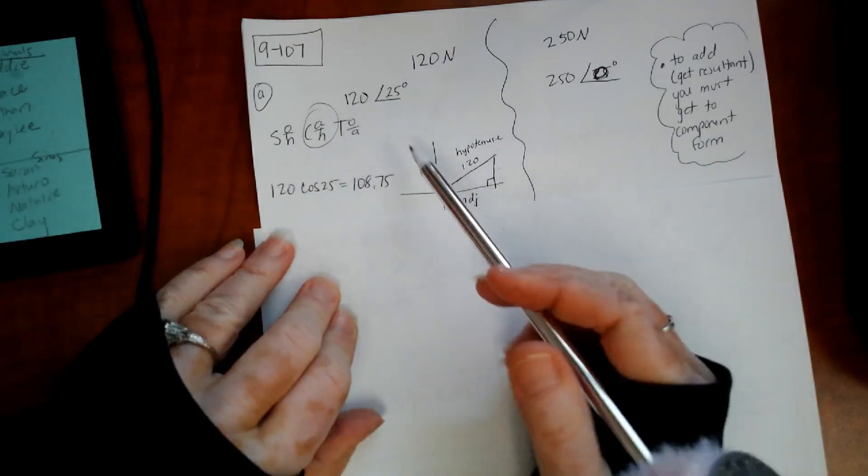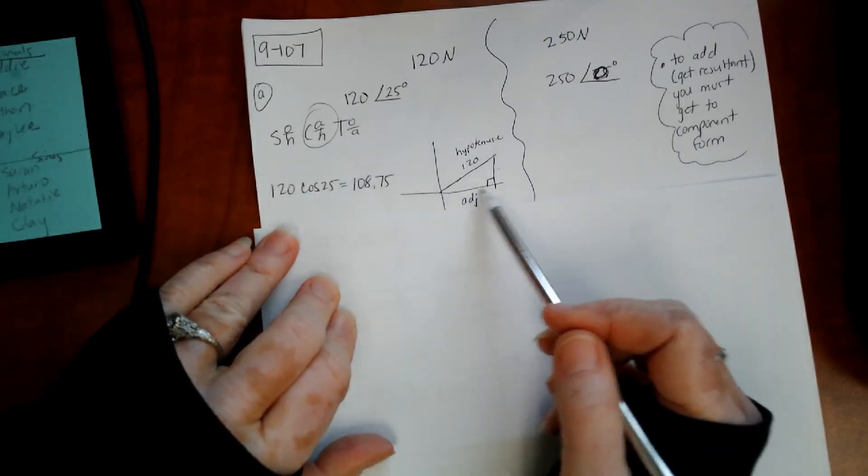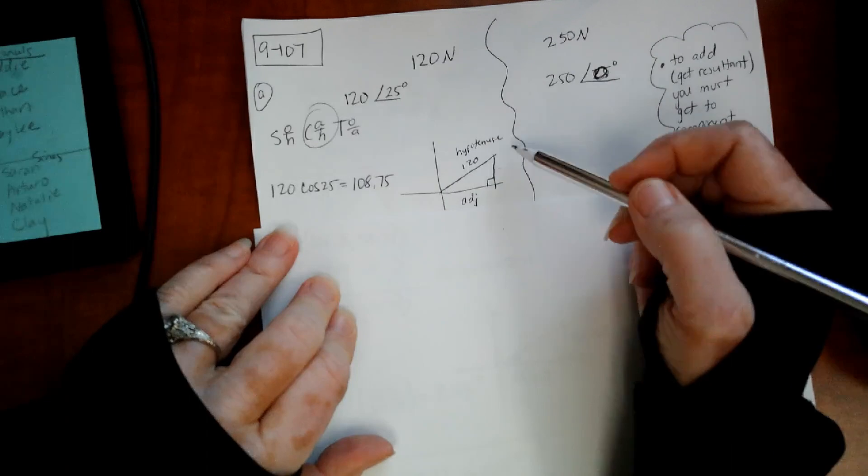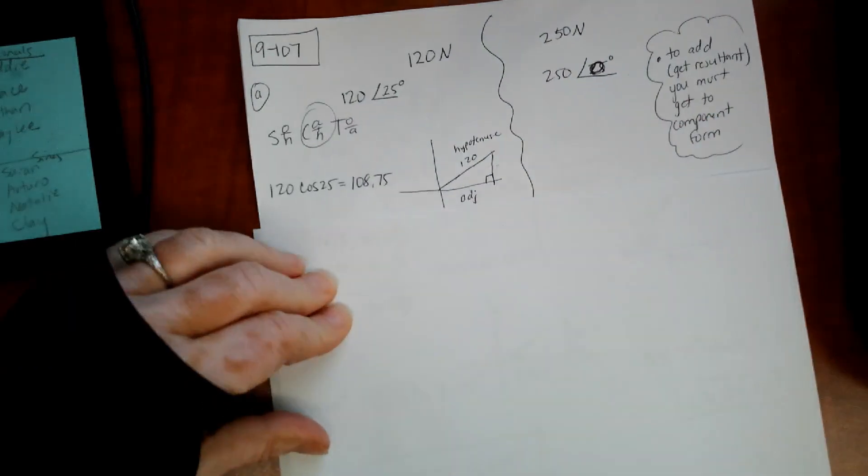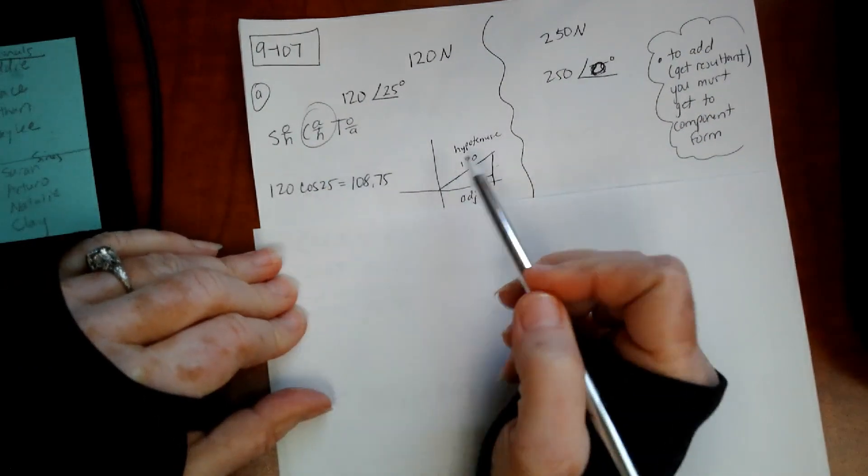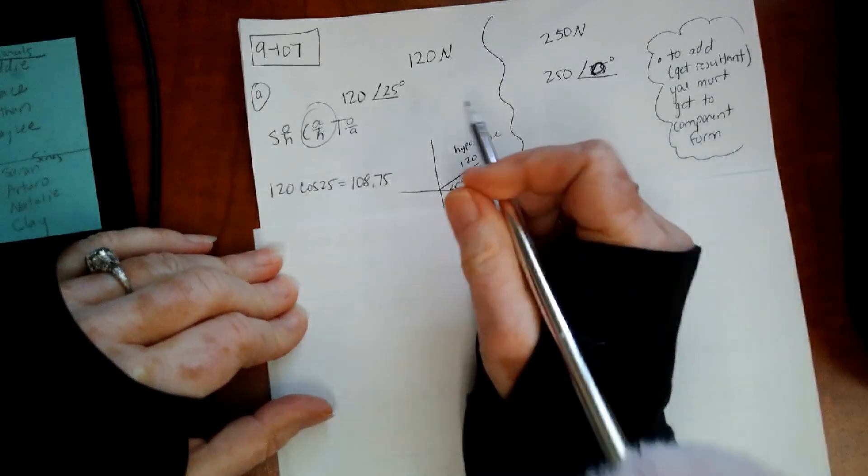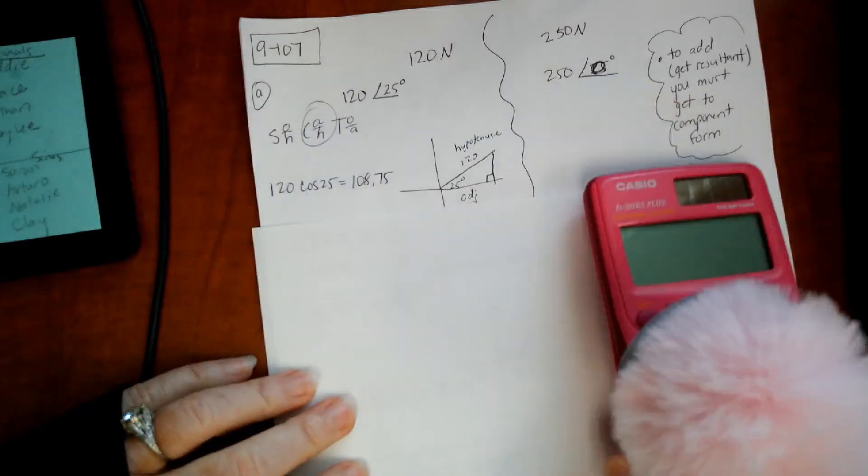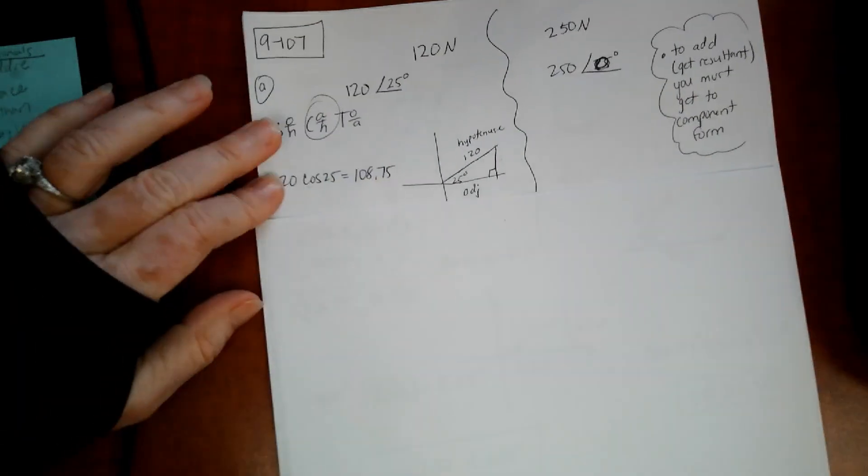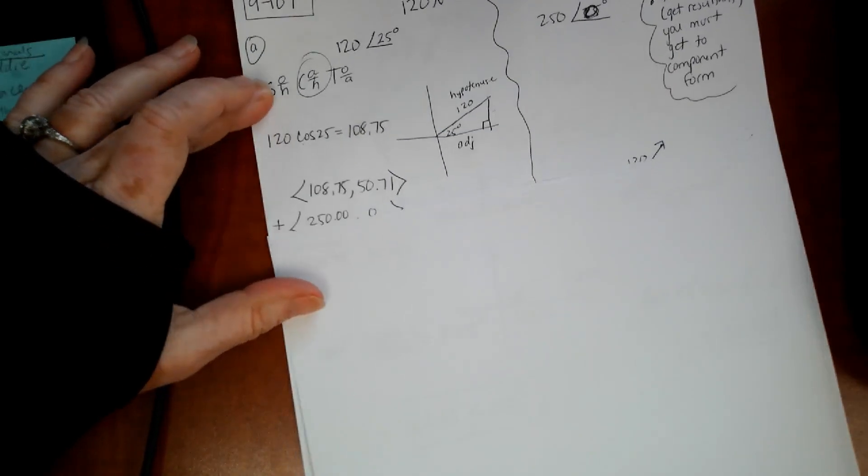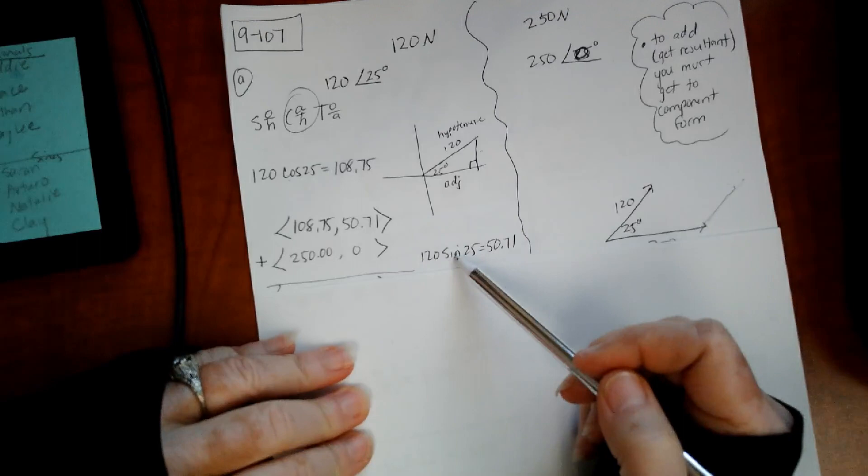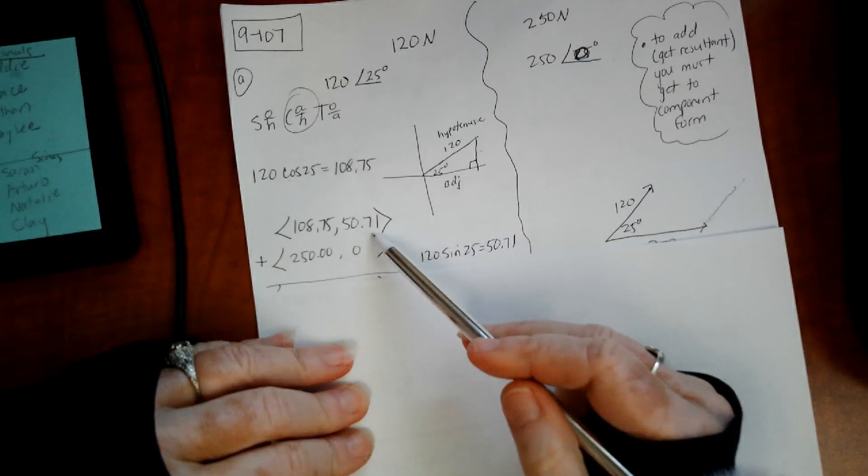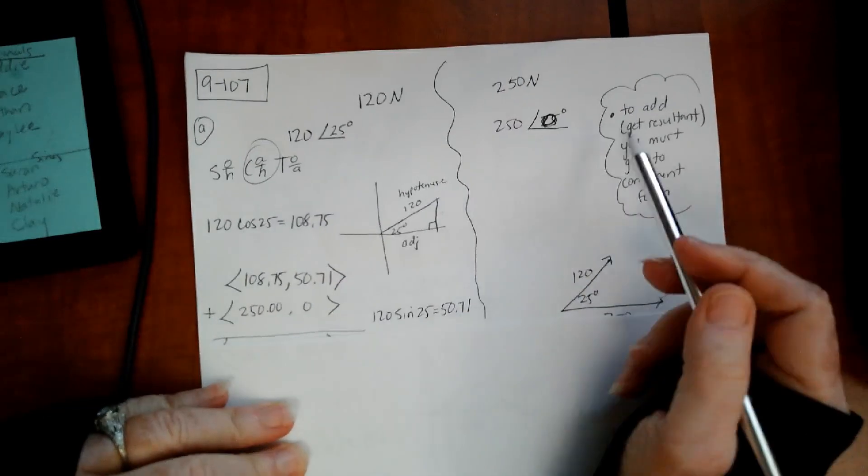If you remember, cosine can give you the horizontal component, and sine can give you the vertical component. Remember, because it's adjacent, and this one's hypotenuse. I can use 120 times cosine of 25. I just put that in my calculator, and I got 108.75. I got the vertical component by going 120 times sine of 25. I typed that into my calculator, and that gave me 50.71.